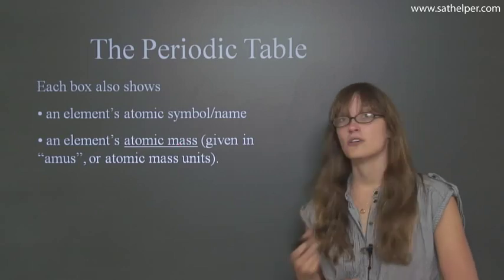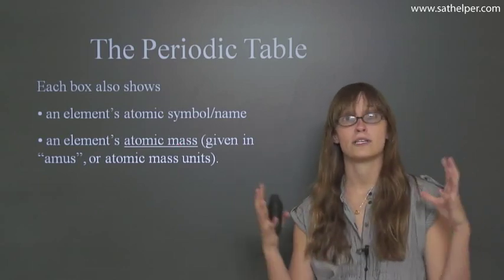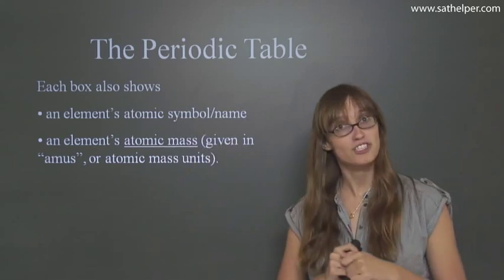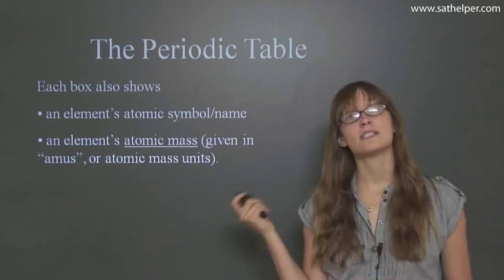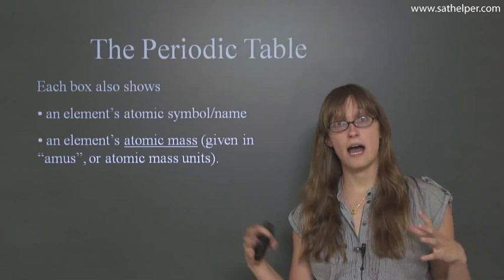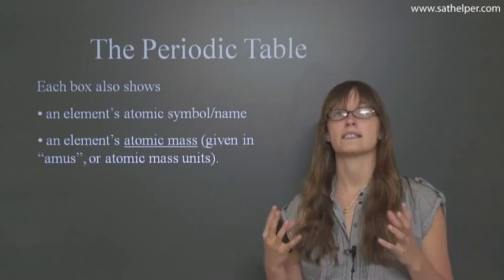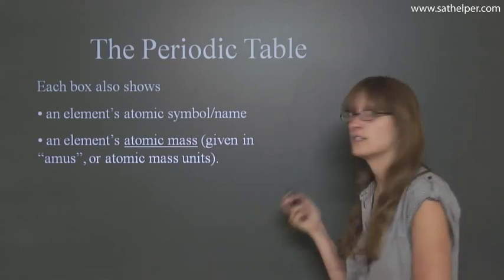And for atomic mass, you need to know how much mass there is in an atom. Some of them are really big and some of them are really small, like hydrogen. So the periodic table is going to tell you how many protons, neutrons, electrons an atom has and what the mass is in AMUs. That's the unit.